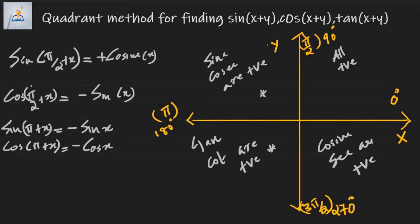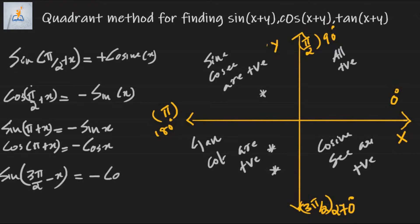Now we find sin(3π/2 − x). As you can see, 3π/2 − x lies in the second quadrant where sin is negative. Also, since the difference is taken with an integral multiple of π/2, sin changes to its co-function, which is cos. So sin(3π/2 − x) = −cos x.